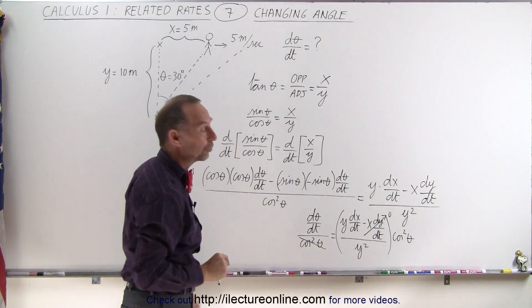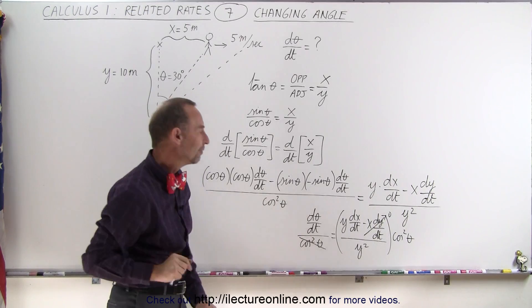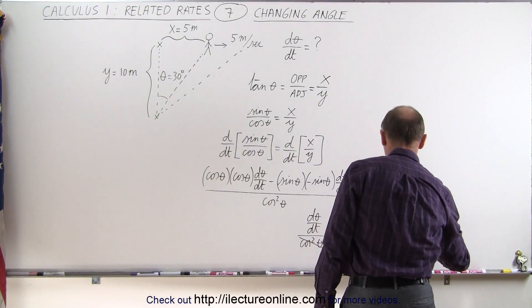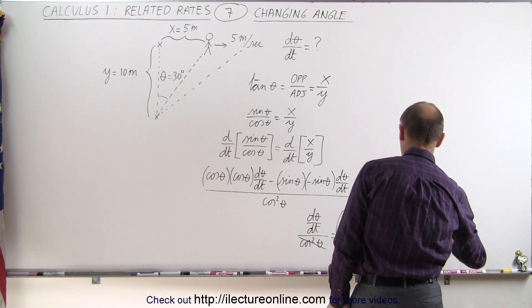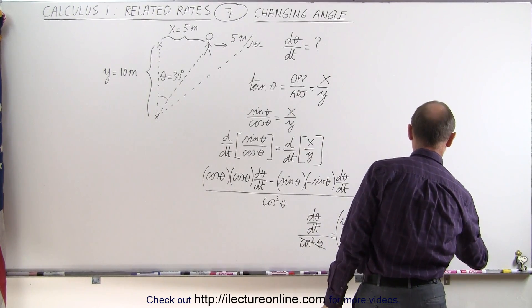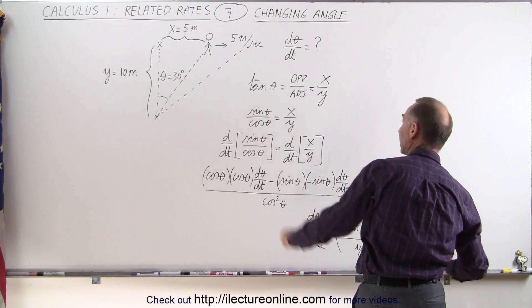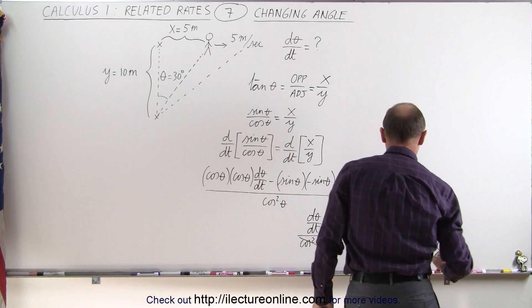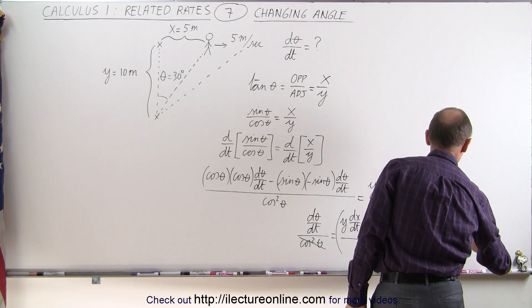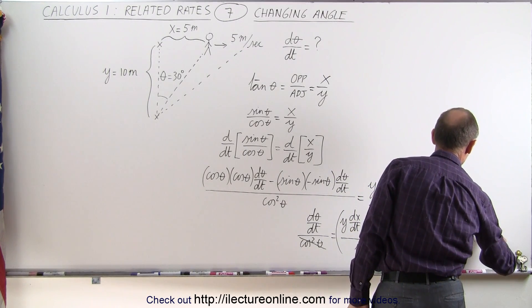We do it at the time that the angle is 30 degrees. So when we plug in the values, we get the following. This is equal to y, which is 10, times dx dt, which is 5, divided by y squared, which is 10 squared, which is 100, and we multiply it times the cosine squared of 30 degrees.